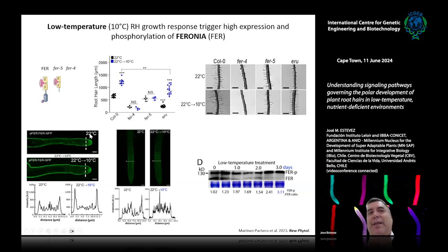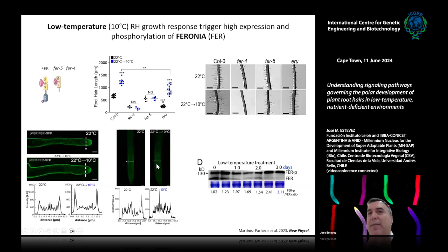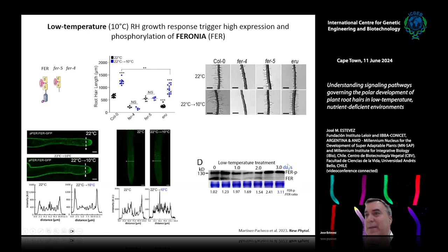We measured the amount of Feronia at the cell surface and found that at 10°C the signal is much higher — more receptor is active on the plasma membrane as well as in the rest of the root. Furthermore, when we measured Feronia phosphorylation after three days of low temperature treatment, we found that Feronia is being fully activated. This is very important because downstream Feronia we know this triggers massive root hair growth, so it makes sense for the receptor to be active.